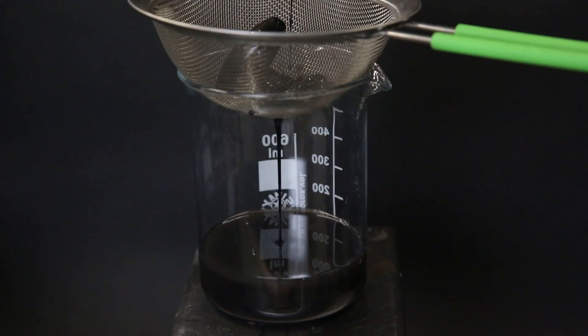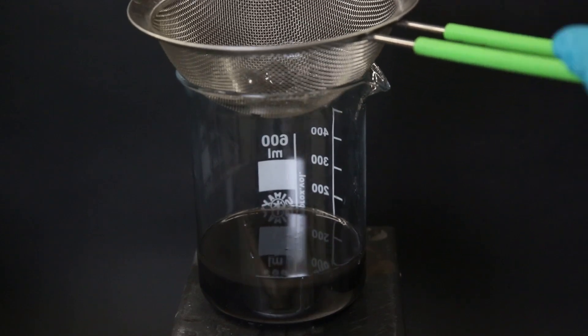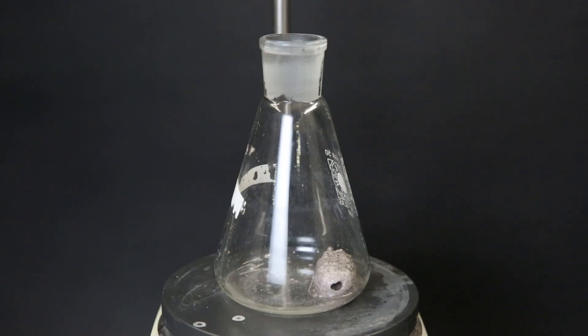I then pour all the contents together through a kitchen sieve to catch the majority of the sodium. Afterward I just mushed all the pieces together because all the beads are annoying to deal with and I put it into a new Erlenmeyer flask.